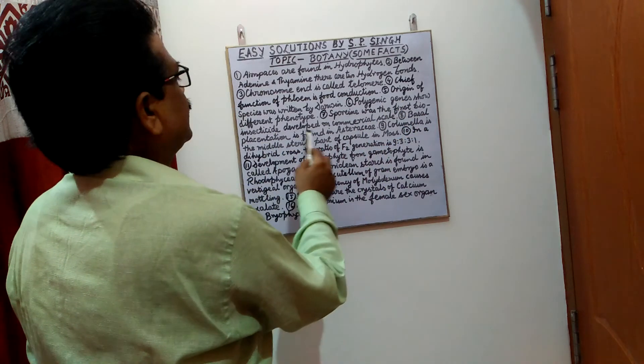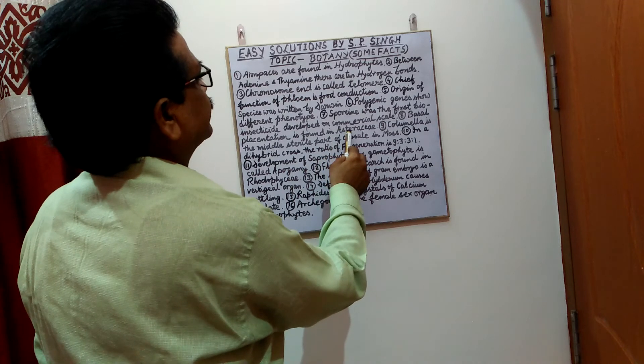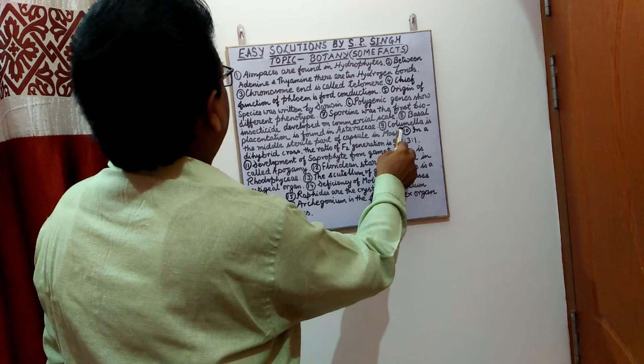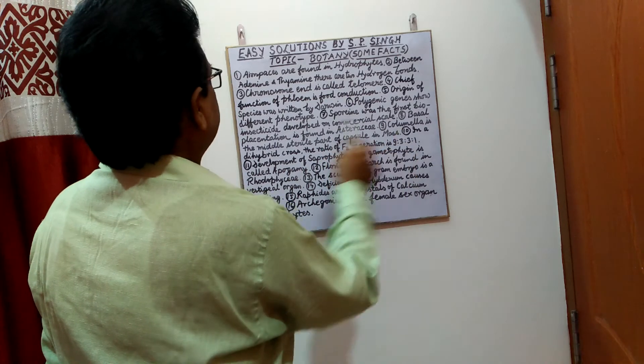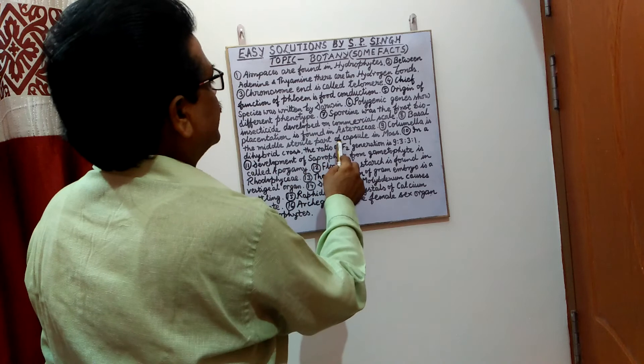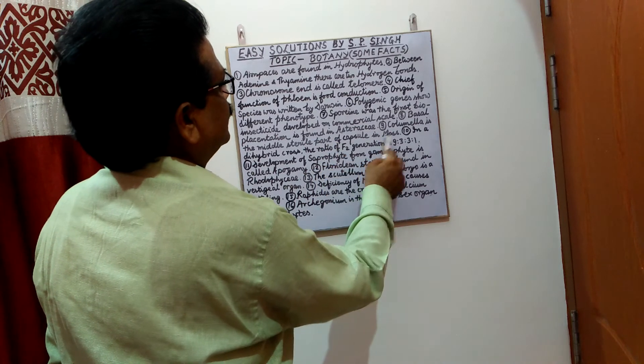Basal placentation is found in Asteraceae. Columella is the middle sterile part of capsule in moss.